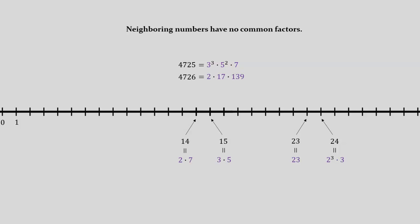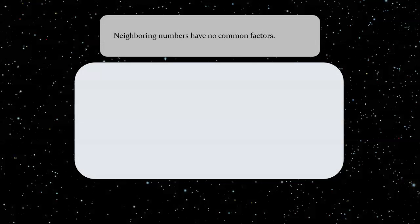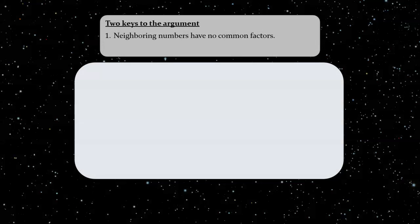All right, I've lingered on this simple but non-obvious fact because it will be one of the two keys to the argument that, I claim, will definitively settle the question of whether or not there are infinitely many primes. The second key ingredient is very simple indeed. It's just a statement that every number greater than 1 has prime factors. At least one. This, of course, is obvious from prime factorization. Non-primes have multiple prime factors, while primes have just one, namely themselves. With these two keys, we can now unlock the argument and settle our question once and for all.